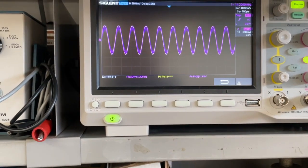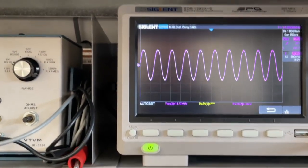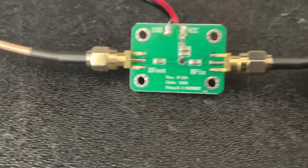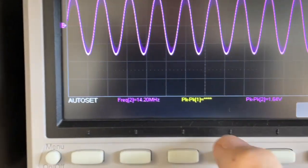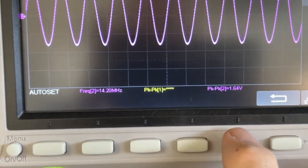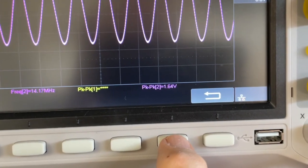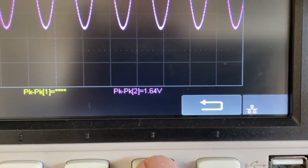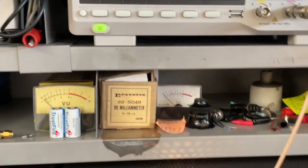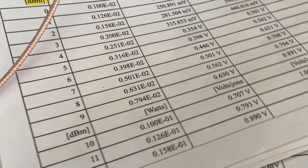So at minus 21 dB coming into the little amplifier and going out to the oscilloscope, we have a peak to peak reading of 1.64 volts. If we look at our little cheat sheet here, 1.64 volts is pretty close to 8 to 9 dB, plus 8 to 9 dB.